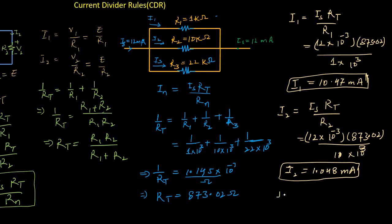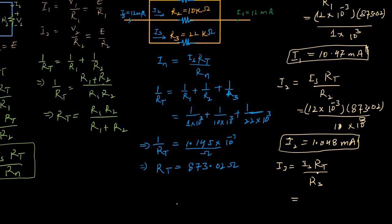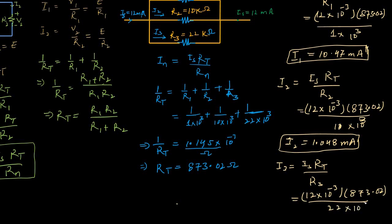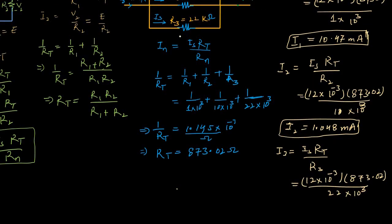The current through the third resistor is found using: I3 equals Is times Rt divided by R3. With Is equal to 12 mA, Rt equal to 873.02 Ω, and R3 equal to 22 kΩ, the current through the third resistor equals 0.476 mA.